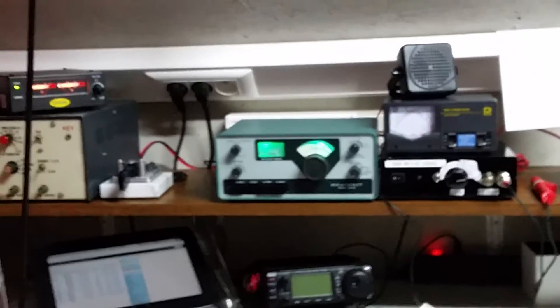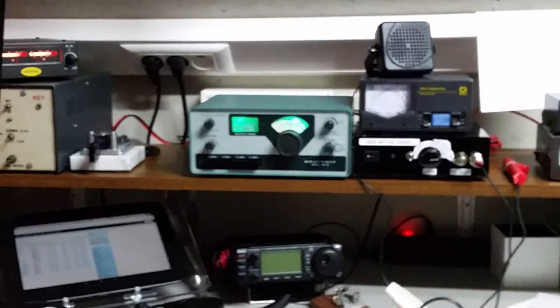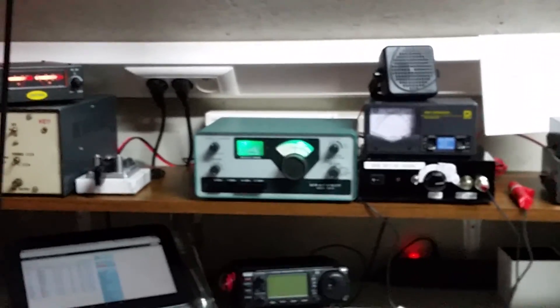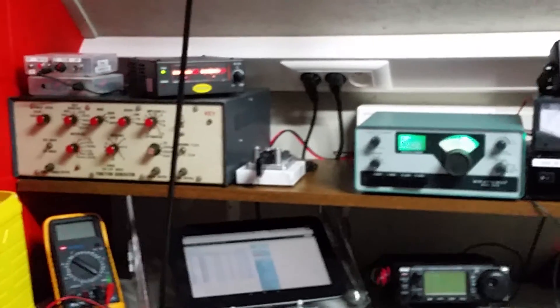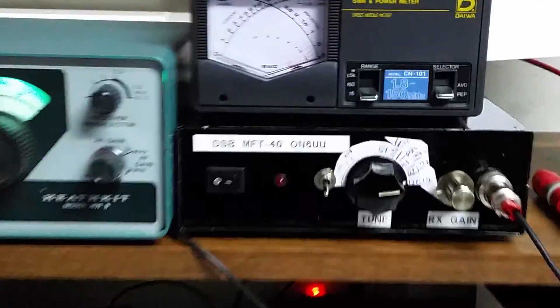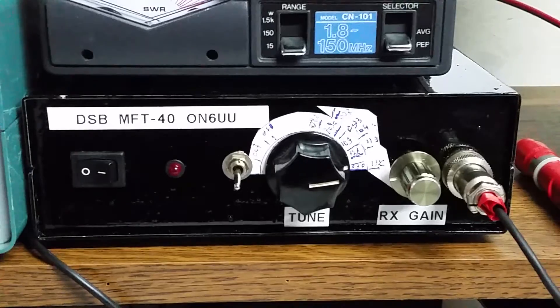My QRP corner. In the middle, below, the IC703. On top, the HW8. And the function generator I made when I was 17 years old. And here we have the MFT40 double sideband transceiver.